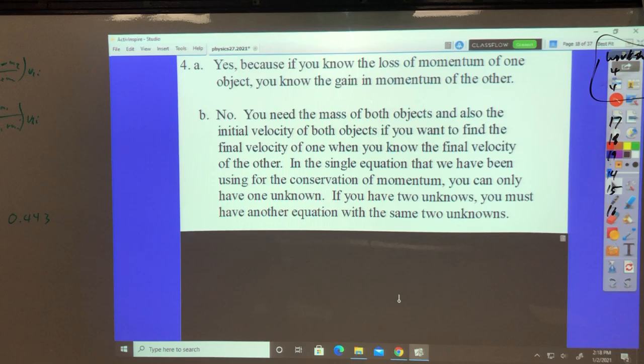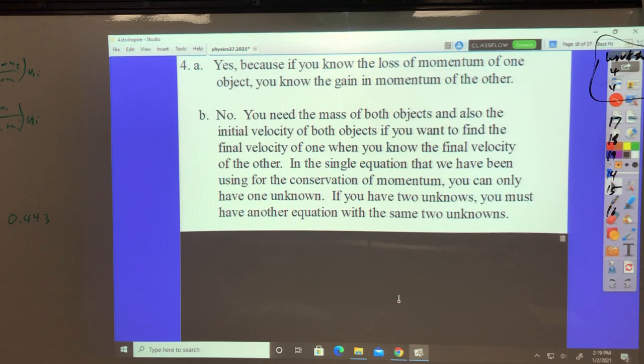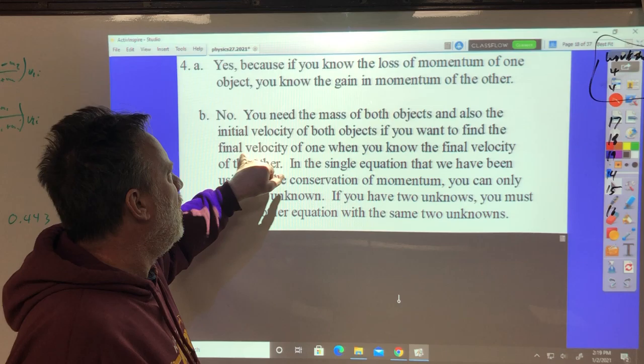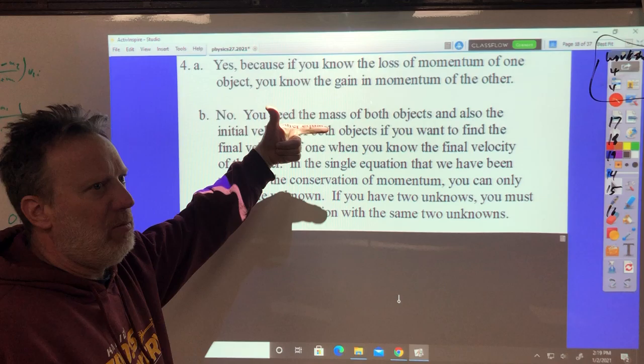Two. If you know the initial and final velocity of one object and the mass of the object, do you have enough information to find the final velocity of the second object? No. You need the mass of both objects and the initial velocity of both objects and the final velocity of one of the objects in order to find the final velocity of the other one. So, what you need is mass of both, initial of both.